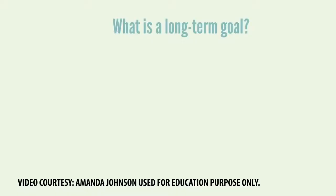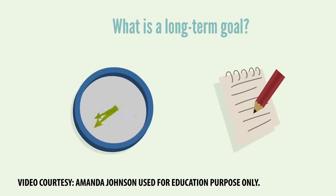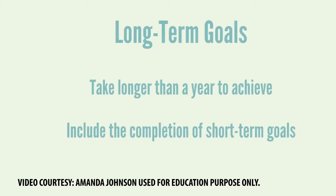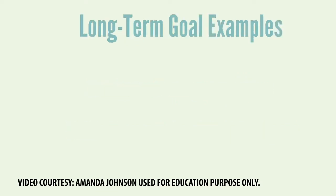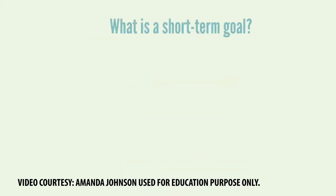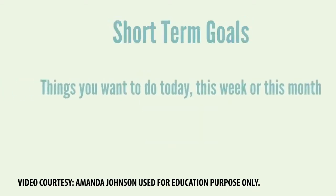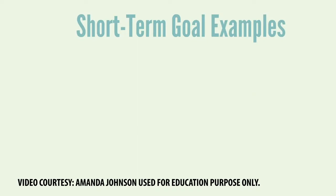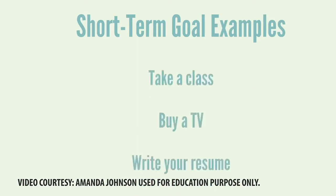What is a long-term goal? It's something you want to do further in the future. Long-term goals require time and planning — it's not something you can do this week or this year. They take more than 12 months to achieve and include the completion of short-term goals. Examples: graduate from college, save for retirement, start your own business. A short-term goal is something you want to do in the near future — today, this week, this month, or this year. Examples: taking a class, buying a new TV, or writing your resume.